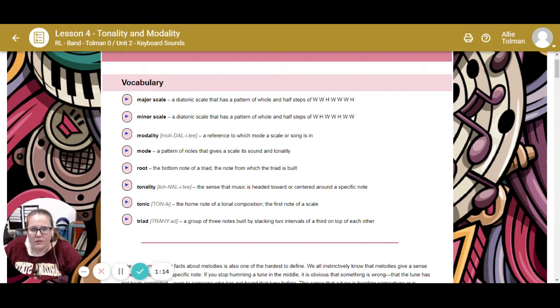Modality, which is a reference to which mode a scale or song is in. Next one is mode. It's a pattern of notes that gives us scale its sound and tonality. Root - the bottom note of the triad, the note from which the triad is built. Tonality - the sense that music is headed towards or centered around a specific note. Tonic is the home note of a tonal composition. Triad - a group of three notes built by stacking two intervals of a third on top of each other.